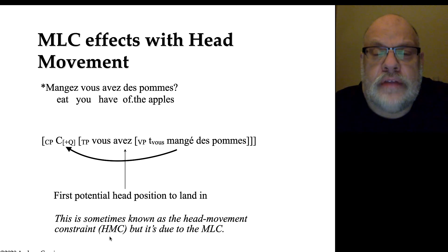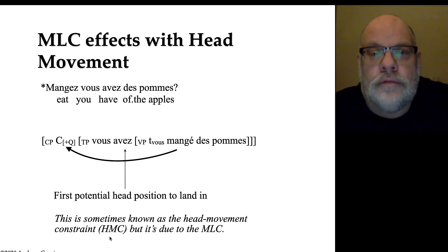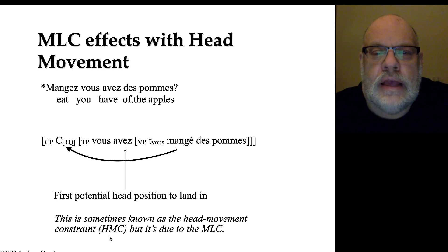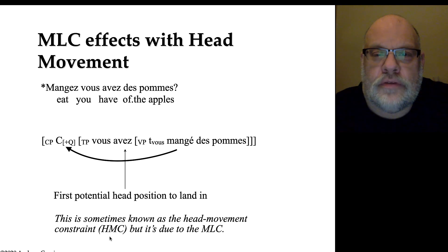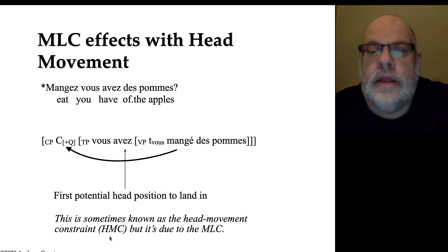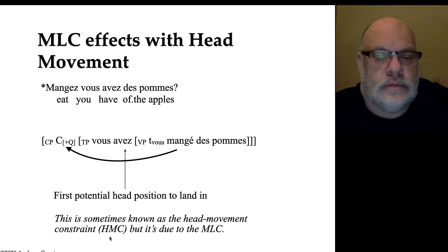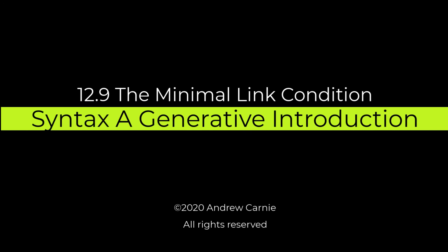To summarize: the minimal link condition is an explanation for a variety of phenomena. It explains WH islands, it explains why super raising is bad, and it explains why head movement constraint violations cannot occur. The minimal link condition says: always move to the first potential position, and if you can't because something else is already there, the result is an ungrammatical sentence.